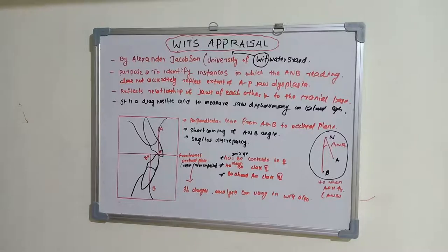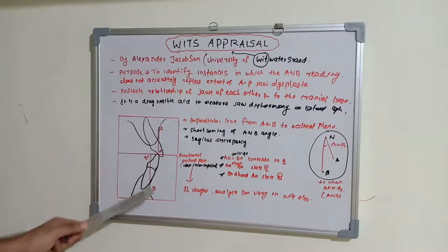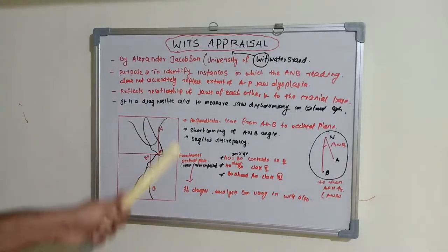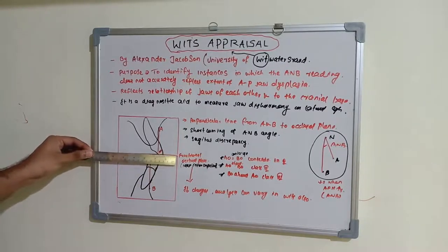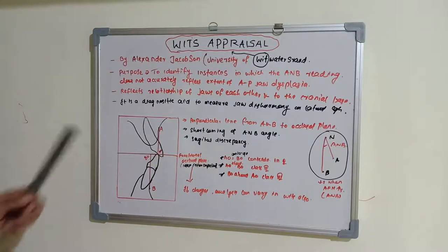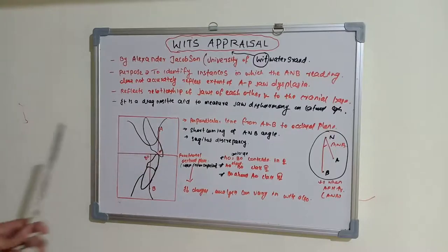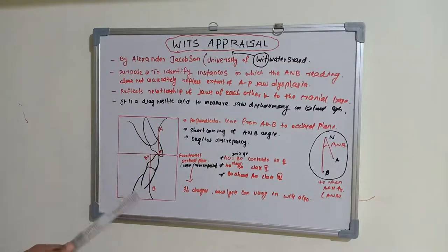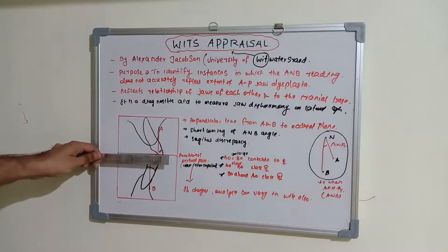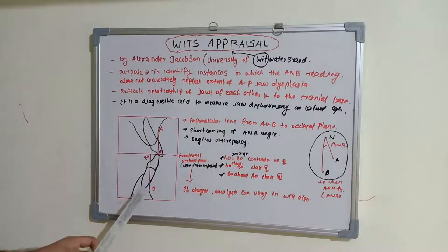In the Wits appraisal, we work on an enlarged portion of the lateral cephalogram showing point A, point B, and the central incisors. From point A and point B, we construct a functional occlusal plane — the plane of maximum intercuspation. We then draw a perpendicular line from point A to this occlusal plane, known as AO, and a perpendicular line from point B to the occlusal plane, known as BO.